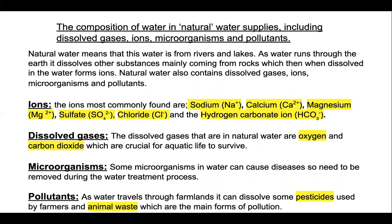There are also some harmful microorganisms in the water, which obviously need to be removed so that diseases aren't present in our normal drinking water. And then similarly, you also get some pollutants. In agriculture, you have pesticides, which are used to treat crops so that animals don't eat them and destroy them, and of course animal waste as well.